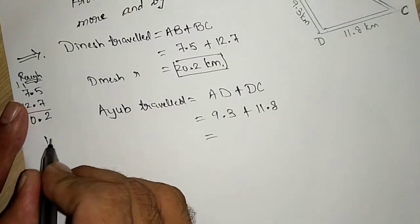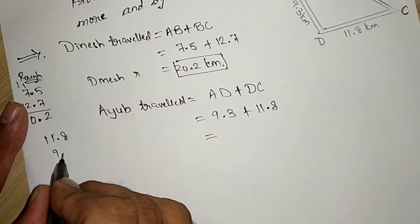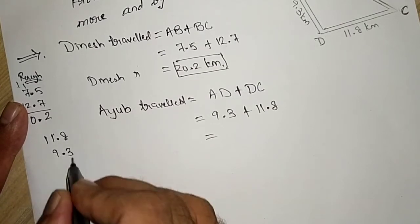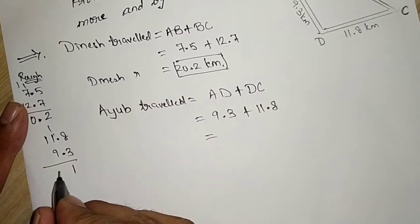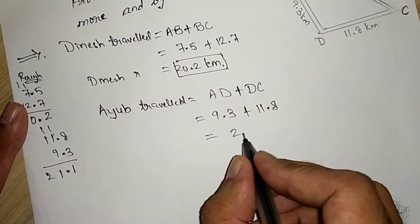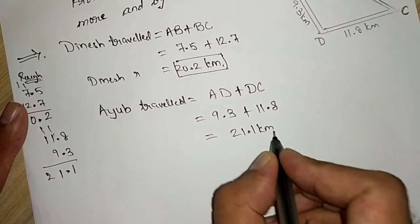Let us do calculation. 11.8 plus 9.3. 8 plus 3 is 11, 1 carry up, 9 plus 2, 11. 1 plus 1, that is 21.1. 21.1 km.